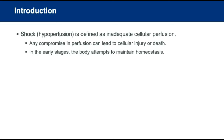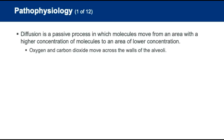In the early stages, the body is going to attempt to maintain homeostasis. Diffusion is the passive process in which molecules move from an area with a higher concentration to a lower concentration. This is how oxygen and carbon dioxide move across the alveoli.